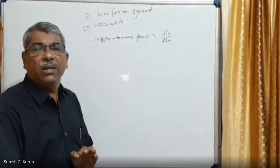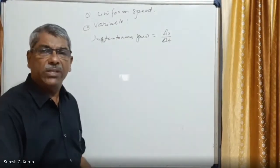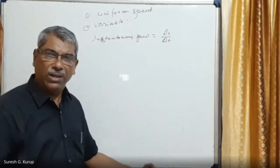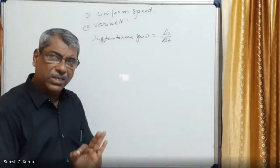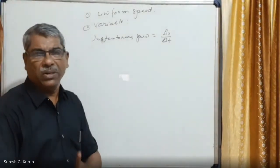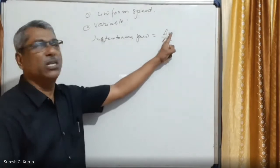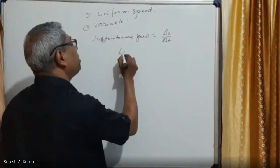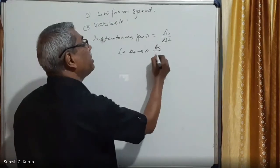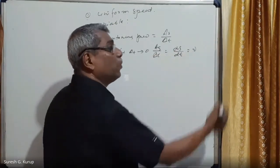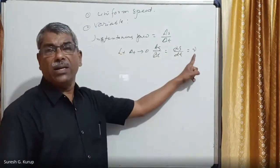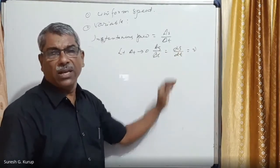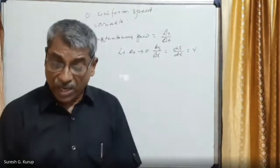Instantaneous speed is calculated only when the body is moving with variable speed — when it covers unequal distances in equal intervals of time. At a particular instant of time, the speed of the body is called instantaneous speed. It is given by the limit as Δt → 0 of ΔS / Δt, which equals ds/dt = v.